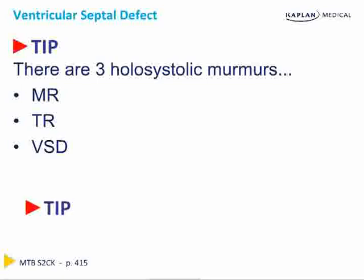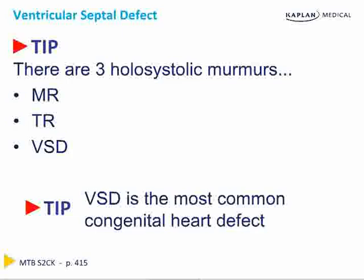VSDs are the most common congenital heart defect in children. Recall from the cyanotic heart disease lecture that tetralogy of Fallot is the most common cyanotic heart defect. If you want to know the most common heart defect in all kids, it's VSD. If you want to know the most common that turns babies blue, it's tetralogy of Fallot. They're linked because TOF includes a VSD as one of its four components: VSD, pulmonary stenosis, right ventricular hypertrophy, and an overriding aorta.